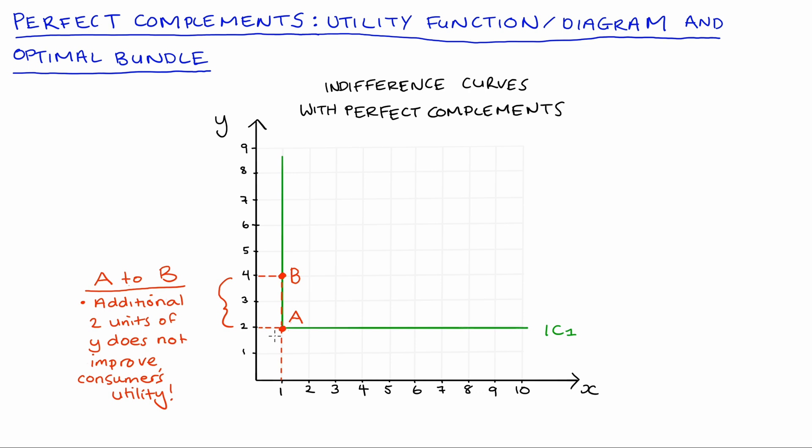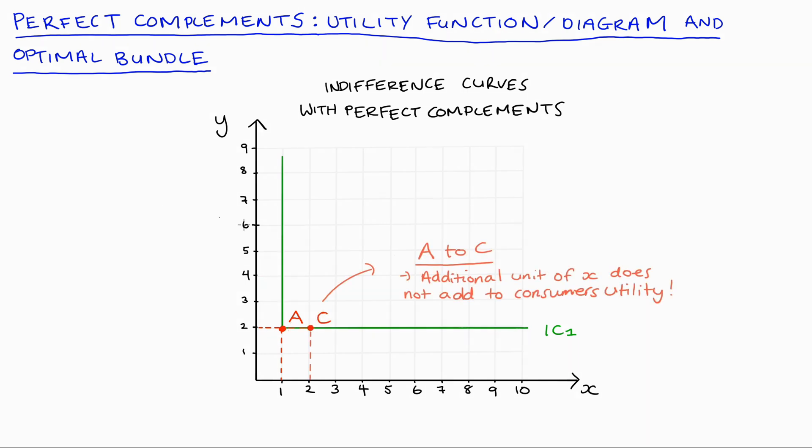And that will be true if we're moving along the horizontal part of our indifference curve as well. So if we went from point A where again x equals 1 and y equals 2 to a point like C where we've added one x but we've held y fixed at 2, you can see that addition of x has not moved us to a higher level of utility. We're still on the same indifference curve, our consumer is completely indifferent between bundle A and bundle C.